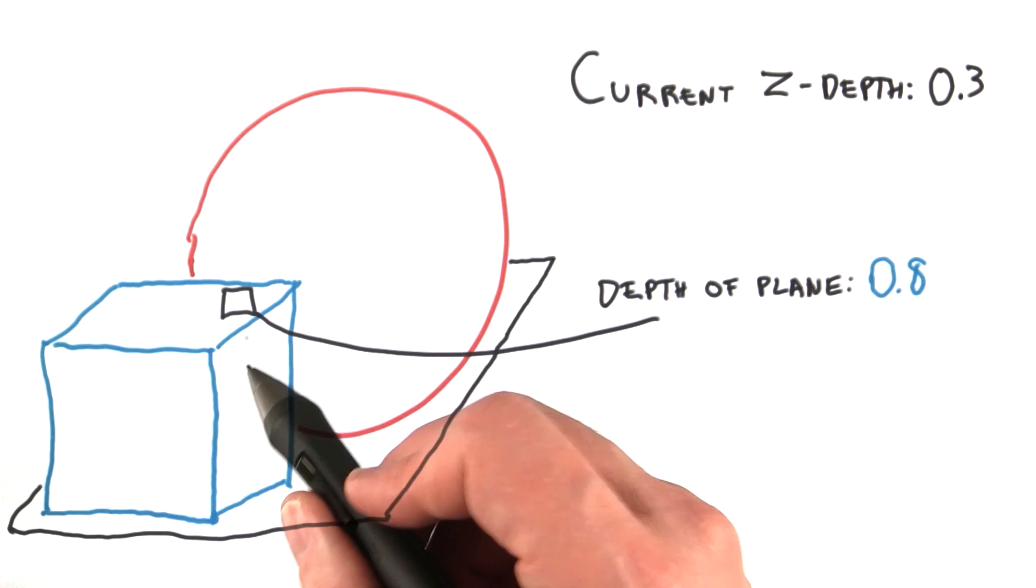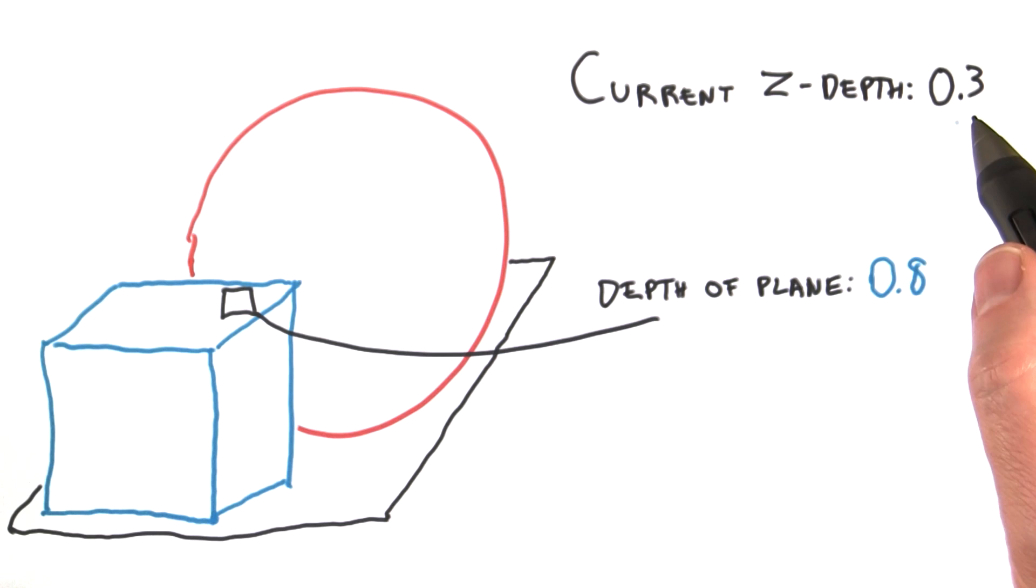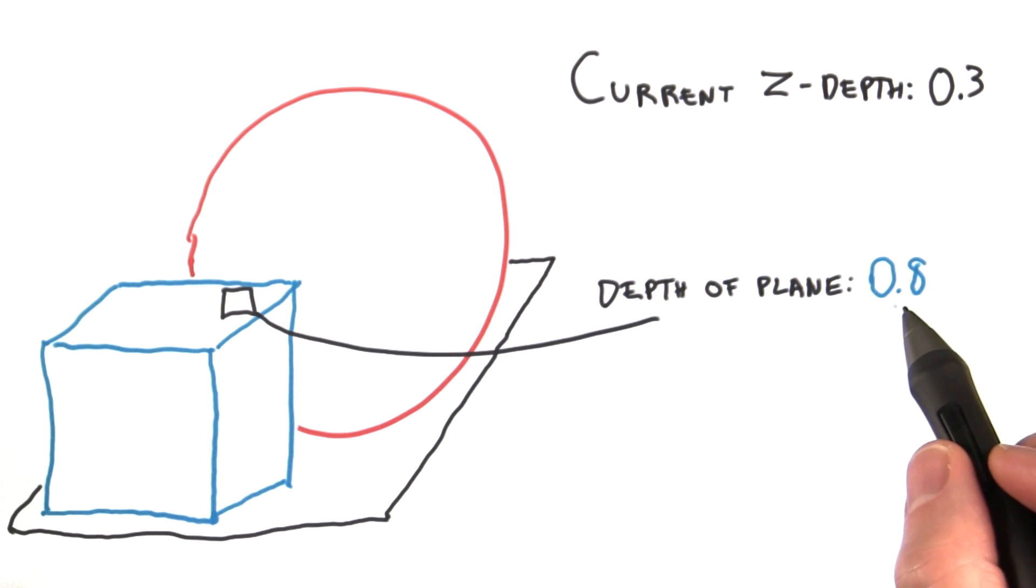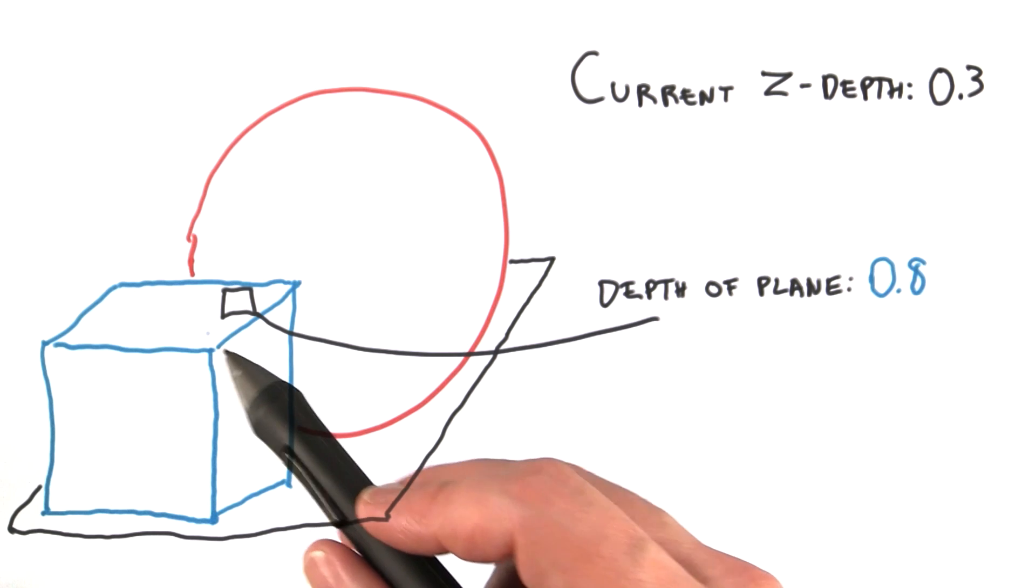Say the last object we draw is this ground plane. At the pixel, it turns out the ground plane's depth is 0.8. This is higher than the current z-depth, 0.3, so the ground plane fails, which is as it should be because the ground plane is obviously farther away than these two objects.